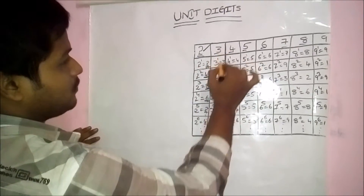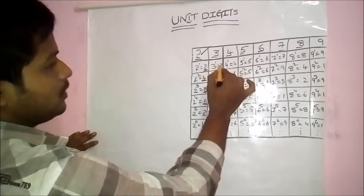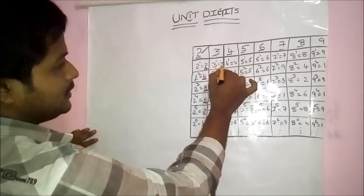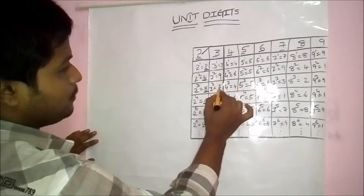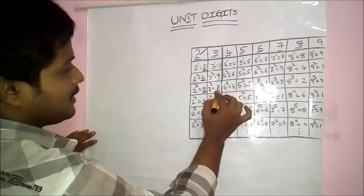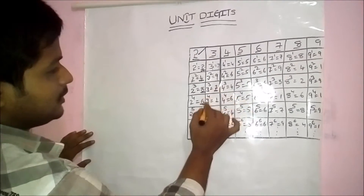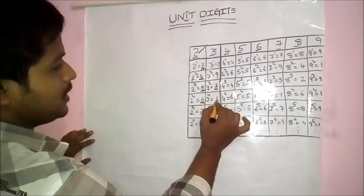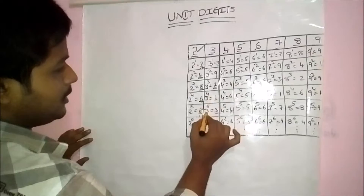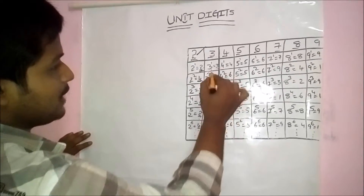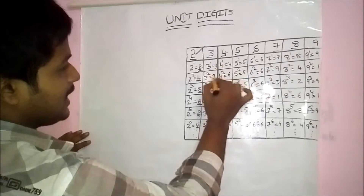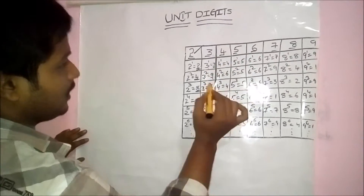Similar fashion for 3 also. 3 power 1 is 3, 3 squared is 9, 3 cubed is 27 — here 7 is the unit digit. 3 power 4 unit digit is 1, 3 power 5 unit digit is 3. It repeats: 3, 9, 7, 1.